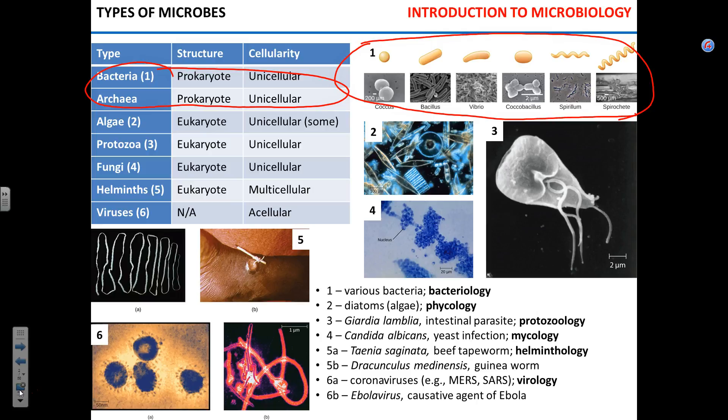This illustration shows you different shapes of bacterial cells. The initial classification of bacteria when scientists started to visualize them using microscopes was based mostly on shape. Coccus is spherical - coccus means grape in Greek. Bacillus is rod-shaped. Vibrio is a curved rod. Coccobacillus is kind of in the middle. Then you have spirillum and spirochete - two slightly different forms of helical bacterial cells.